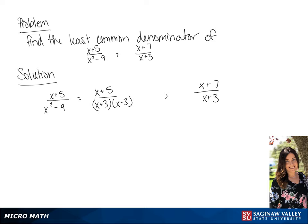We are going to multiply the second fraction by x minus 3 over x minus 3. And we will get a least common denominator of x squared minus 9.